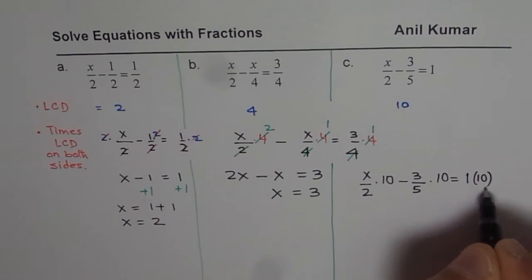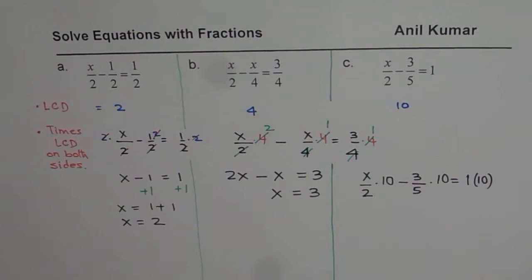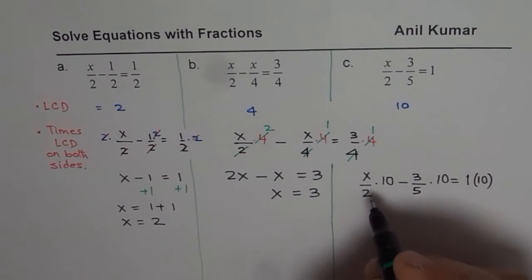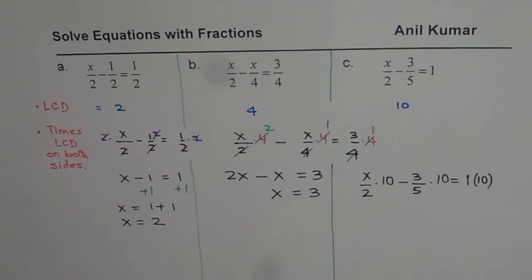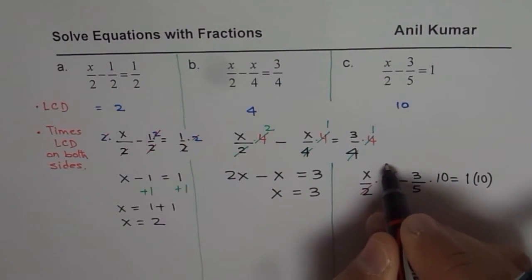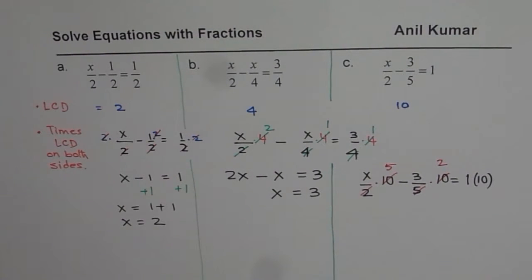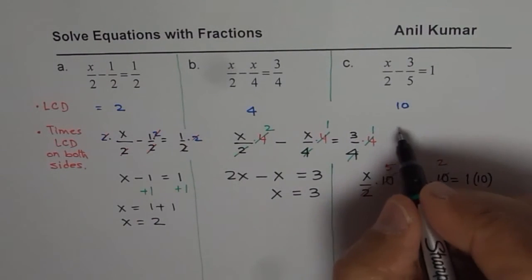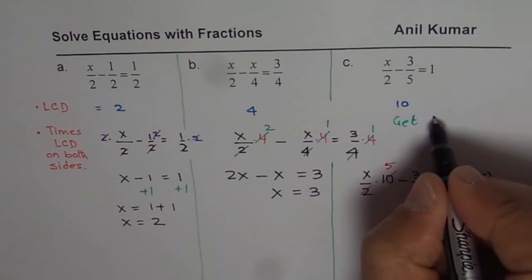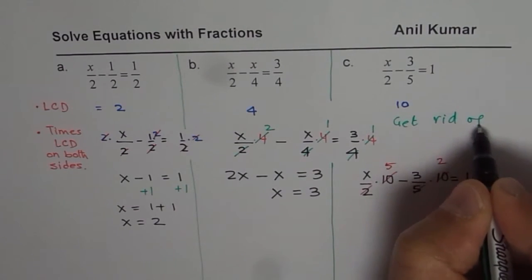You could write in brackets also. Times 10. So multiply each term by 10. Now simplify. So when you simplify this, you could cross. It goes 5 times. This goes 2 times. And that is 10 itself. So the idea here is, get rid of fractions. So that is the policy.